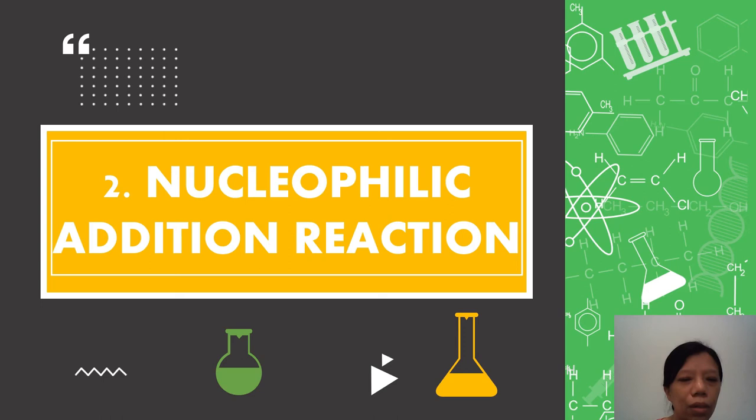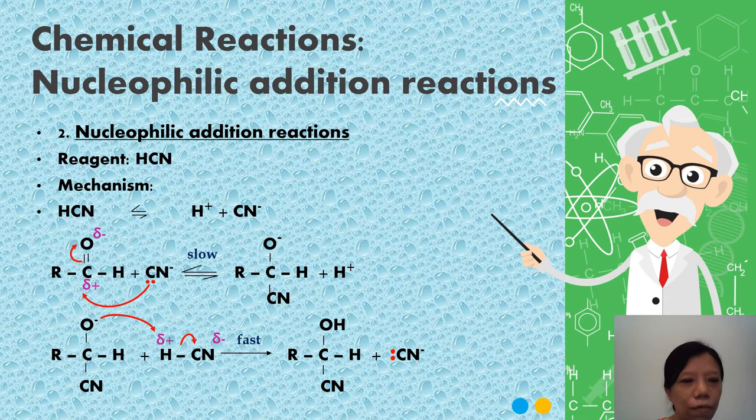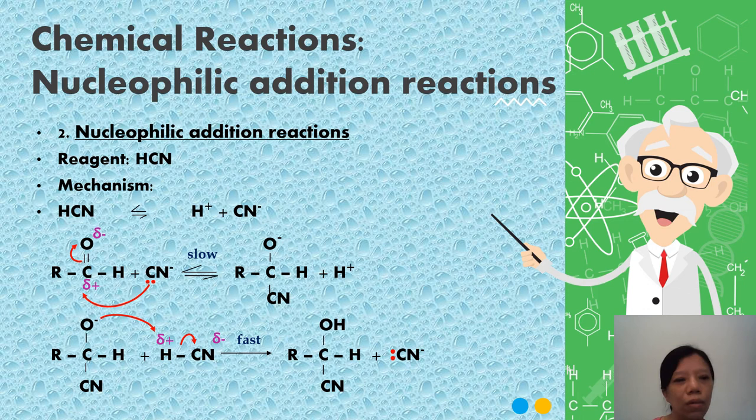Now we look at nucleophilic addition reactions. This is the mechanism. We use hydrogen cyanide. The carbonyl compound has carbon double bond oxygen. It makes the carbon, because of the oxygen atom being very electronegative, have a partial positive charge. So it is prone to attack by nucleophiles. Nucleophiles are electron pair donors. That's why carbonyl compounds undergo nucleophilic addition. It has a double bond here, so it can add atoms.